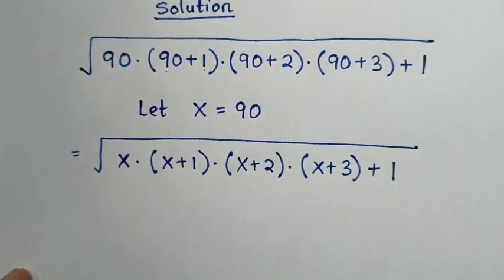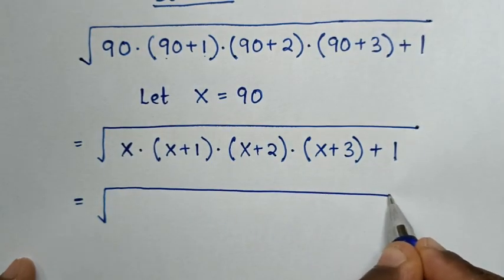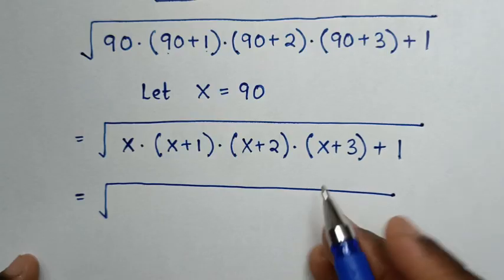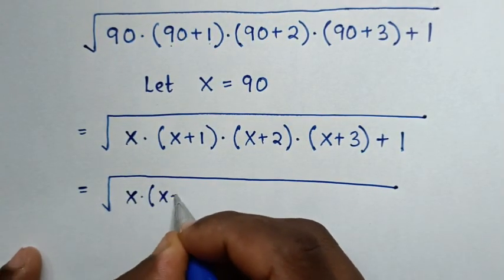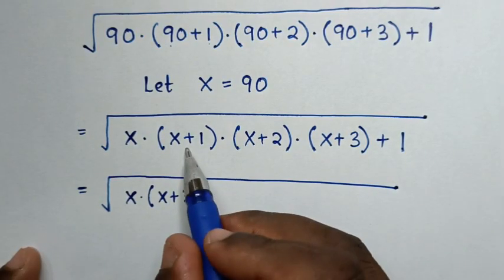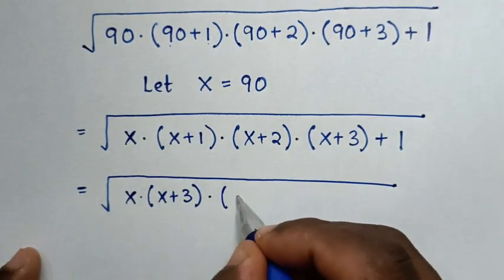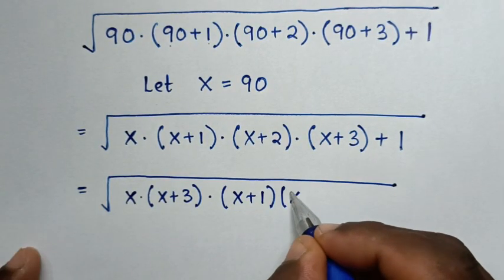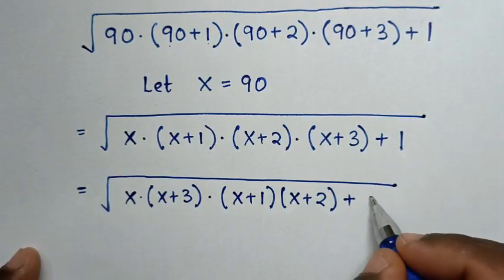In the next step, it will be equal to square root of — we take x times (x+3), so here it will be x(x+3) times (x+1)(x+2), then plus this 1.